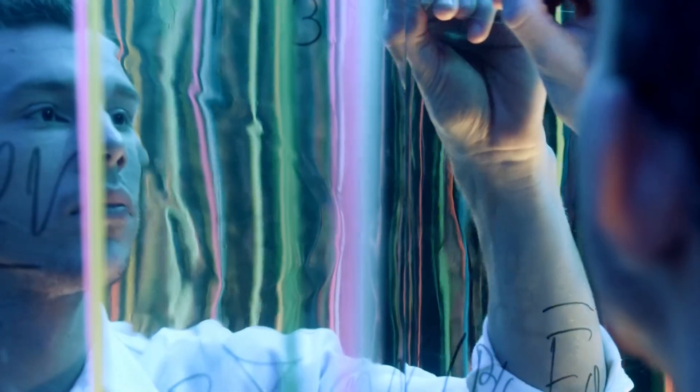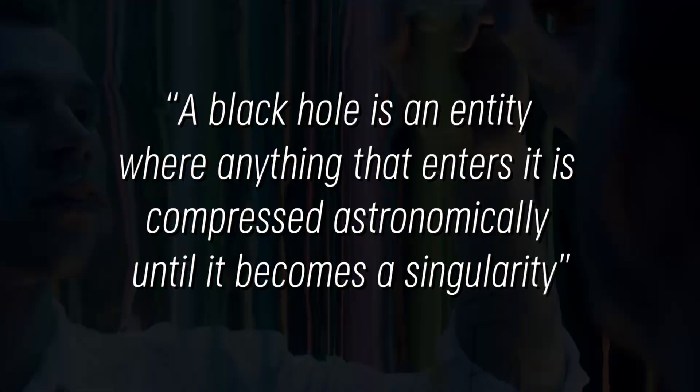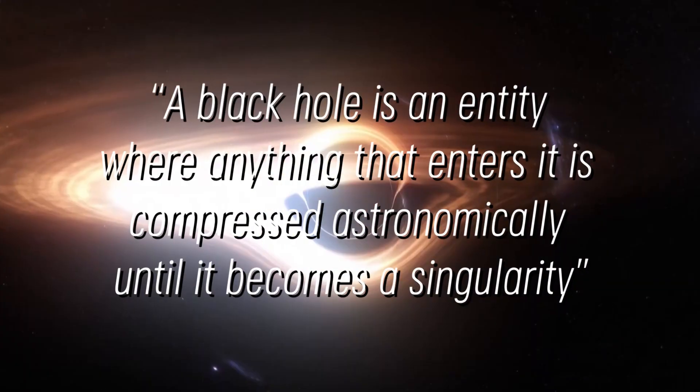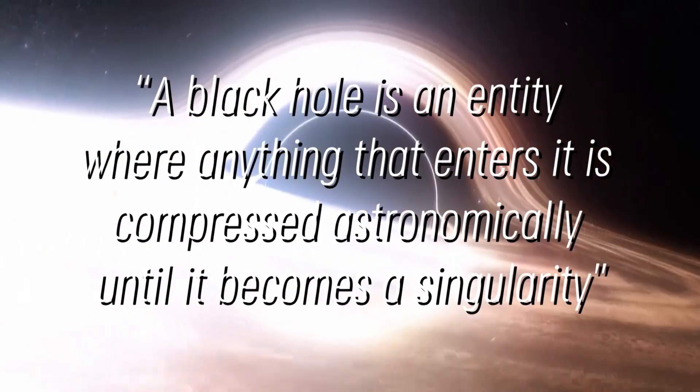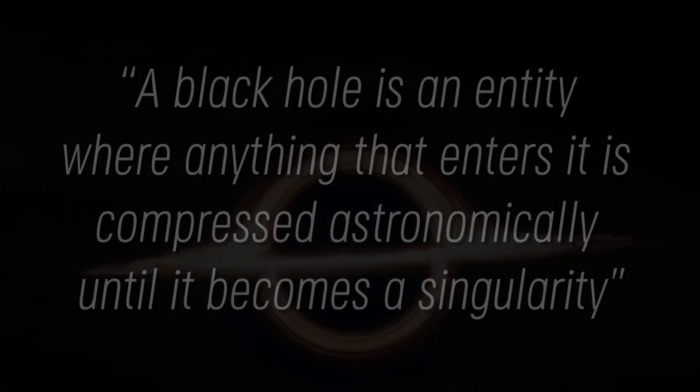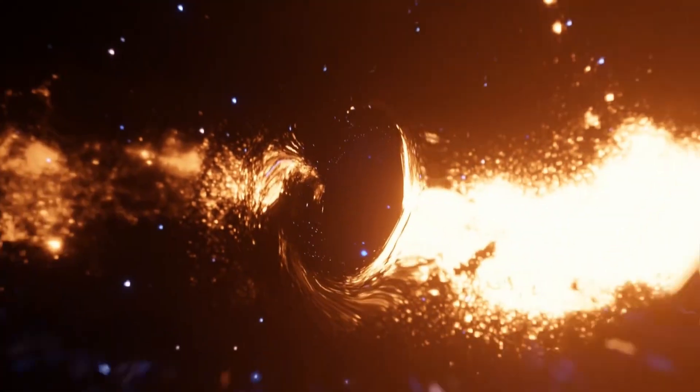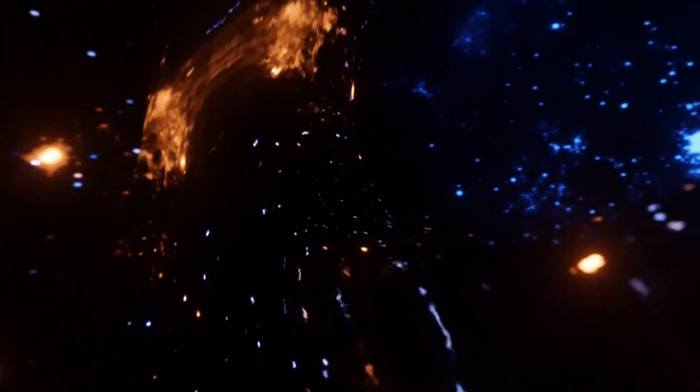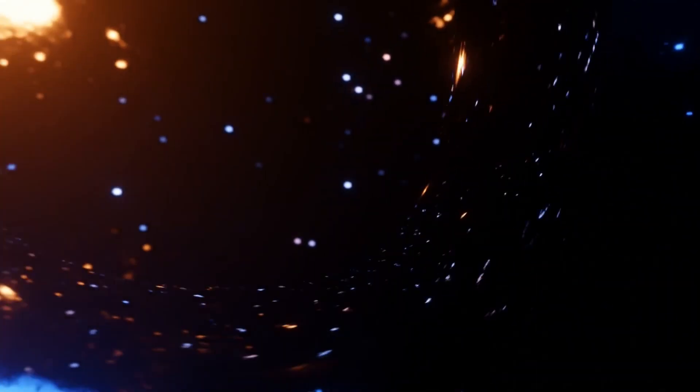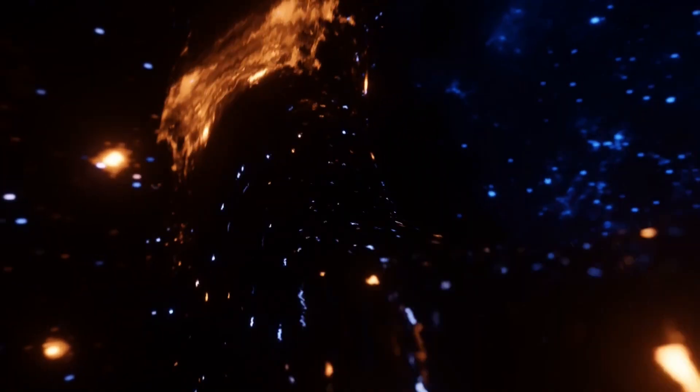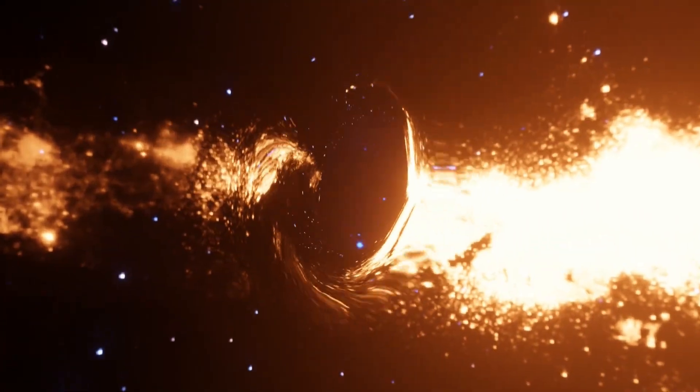According to most physicists around the world, a black hole is an entity where anything that enters it is compressed astronomically until it becomes a singularity. They have explained that due to the way black holes work, if someone were to fall into one, they would stretch like spaghetti, slowly dying in this form before reaching the final spaghetti form. This is one of the scariest parts of the research done on black holes.